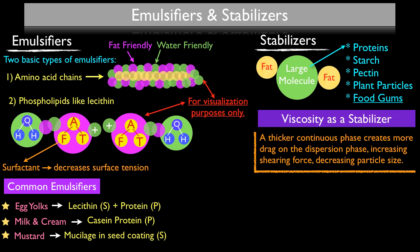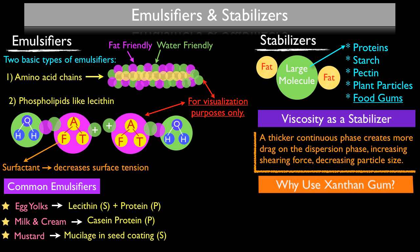One of the favorite stabilizers is xanthan gum, because it will add viscosity to a water-based liquid and you only have to use a very small amount — usually about half a percent by weight or less — and it has no perceptible flavor.